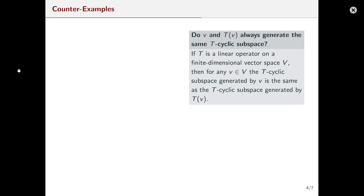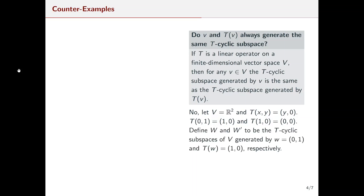Now consider another finite dimensional vector space V with a linear operator T. For any vector v and the vector T of v, will these two vectors generate the same T-cyclic subspace? We can see this is not the case if we consider V to be ℝ², and let T(x, y) = (y, 0). Taking the vector (0, 1) and T(0, 1) = (1, 0) as w and T(w) respectively, and defining W and W′ as the T-cyclic subspaces generated by these two vectors: W is the span of {(0,1), (1,0)}, but W′ is the span of just {(1, 0)}. So these two spaces are not equal.